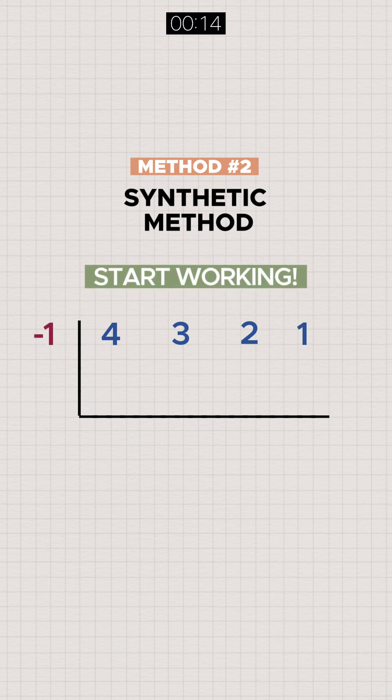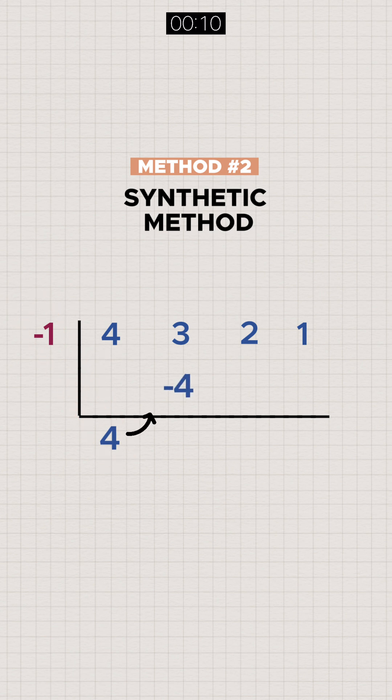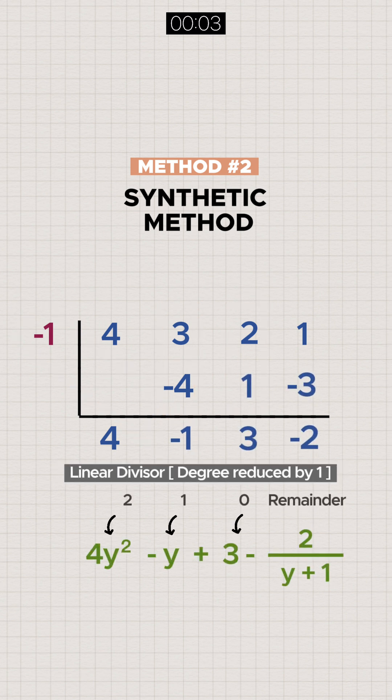Start off the working by bringing down the first number within the frame, multiply it as seen and write the product on the next column. Sum up the numbers within the column and repeat this process. Lastly, express your answer with a reduced degree.